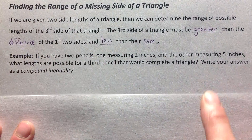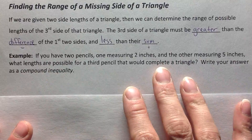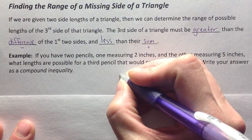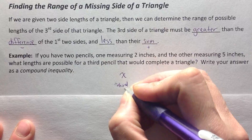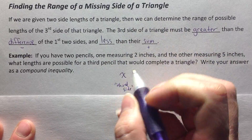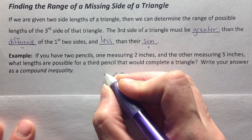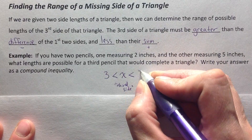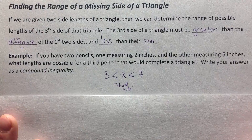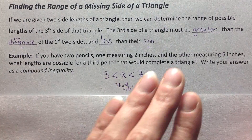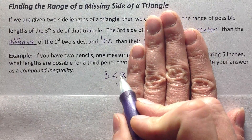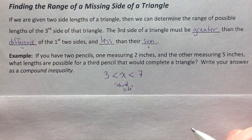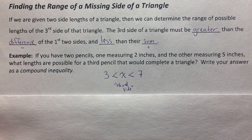The directions are asking us to write our answer as a compound inequality — compound means you've got more than one. Let's say x is my third side. My third side has to be greater than the difference: I subtracted and got three. And it has to be less than their sum: I got seven by adding them. So x has to be greater than three and less than seven — it has to be between three and seven. Now you give it a try.